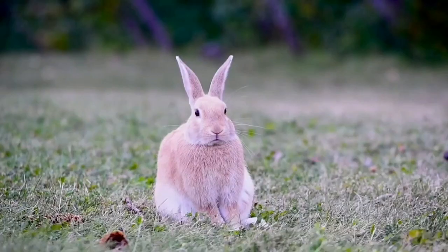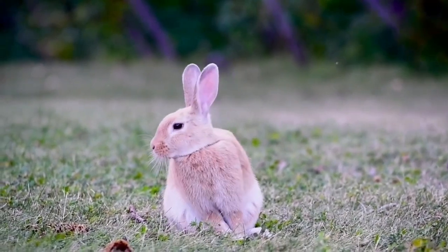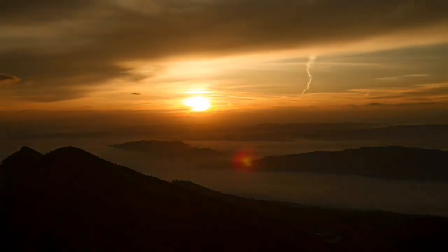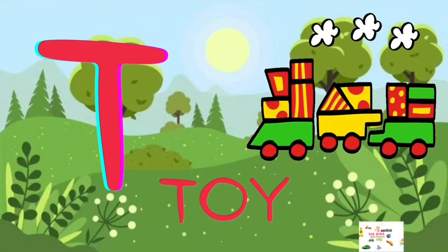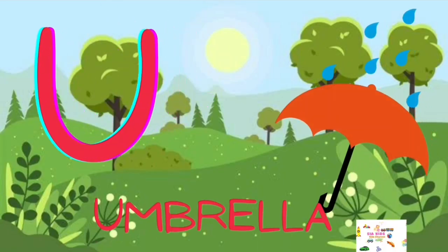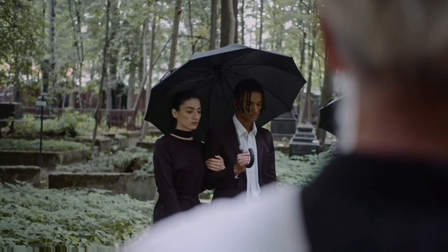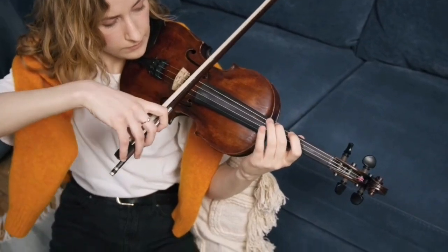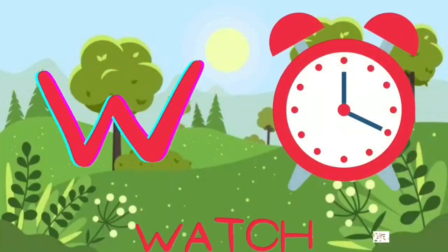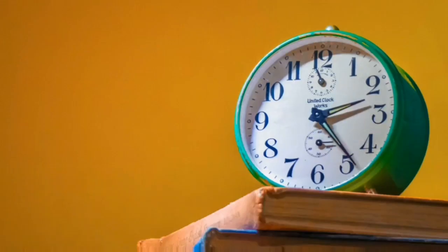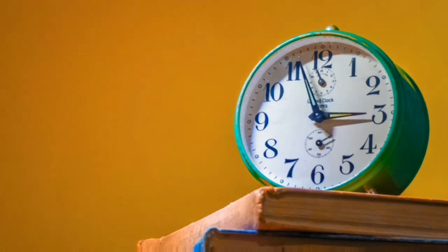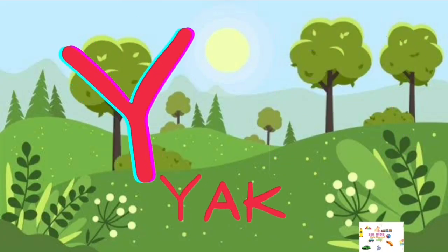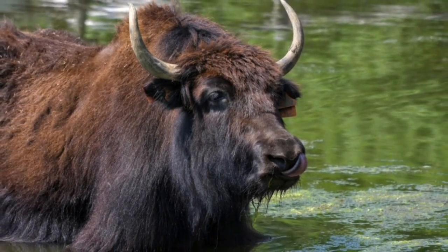R for Rabbit, S for Sun, T for Toy, U for Umbrella, W for Watch, X for Accessory, Y for Vac, Z for Zebra.